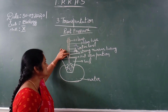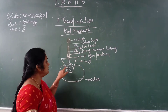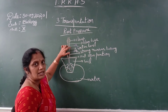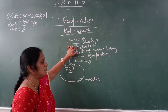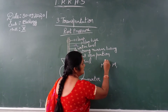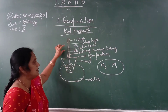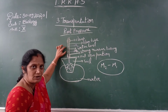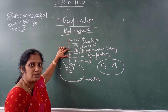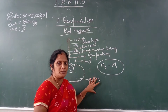This increase occurs because the roots, which are present in water, slowly absorb the water upward. The water level increases to M2. So M2 minus M1 tells us how much water has been absorbed by the roots in a given time period — for example, in one hour.